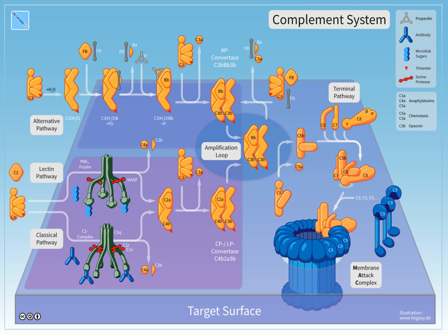The C1R2S2 component now splits C4 and then C2, producing C4A, C4B, C2A, and C2B. Historically, the larger fragment of C2 was called C2A but is now referred to as C2B. C4B and C2B bind to form the classical pathway C3 convertase, which promotes cleavage of C3 into C3A and C3B. C3B later joins with C4B2B to make C5 convertase.